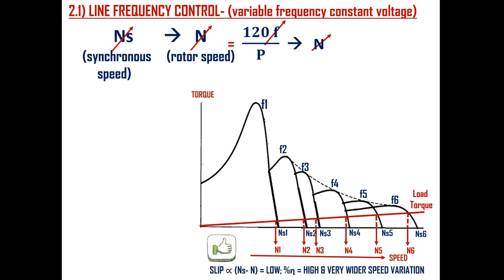As you can see, the difference between synchronous speed Ns and rotor speed N is small across the entire range from low speed N1 to high speed N6. That is, both Ns1 minus N1 and Ns6 minus N6 are small. Since slip, proportional to Ns minus N, is small, efficiency will be high for the entire speed range — which is not the case in line voltage control, where slip will be high at low speed and efficiency will be low. Also, we can get very wide speed variation compared to line voltage control.